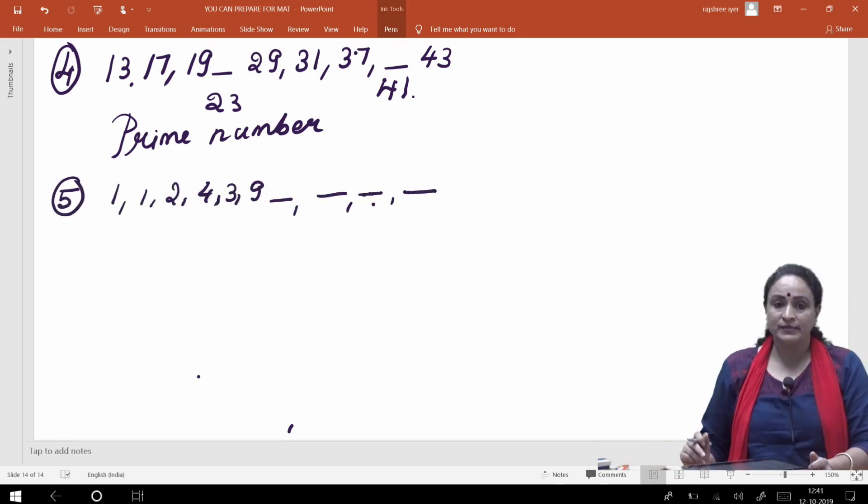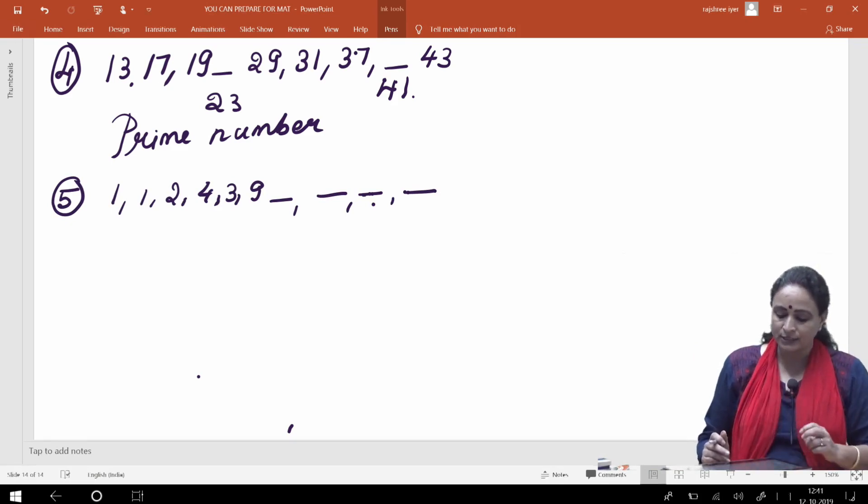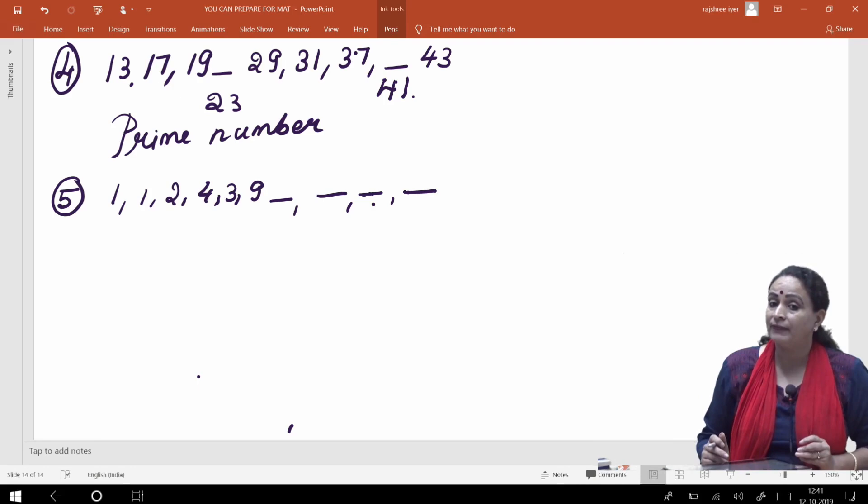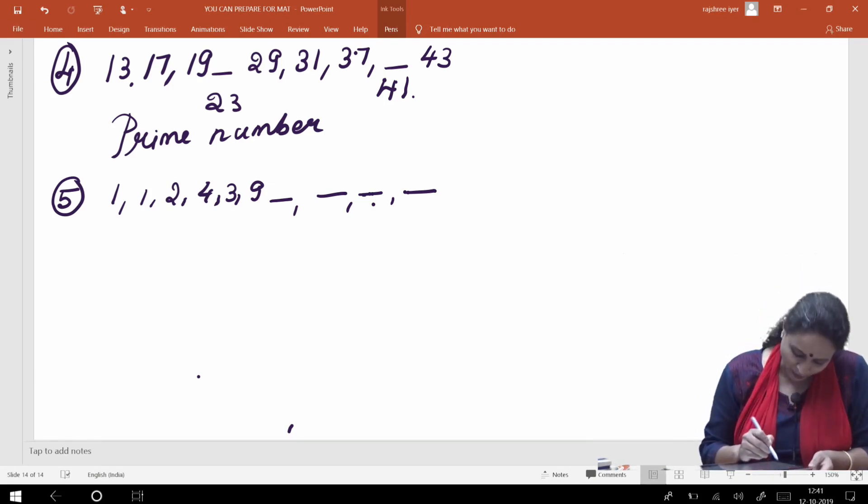Now, let us move on to the fifth question. Fifth question mein likha hai hai, 1, 1, 2, 4, 3, 9, dash, dash, dash and dash. Kya ayega ho? Pattern ko samajhiye hai. Haan, kahi logon ko dikh gaya, chalo chalo chalo. Bilkul, bilkul, aapka dimag ekdum sahih chal raha hai.